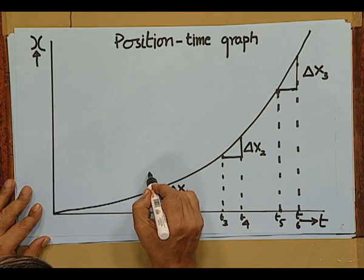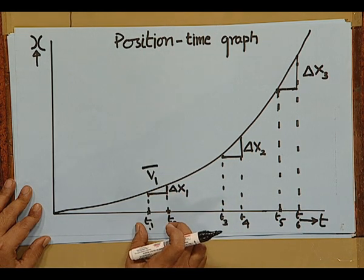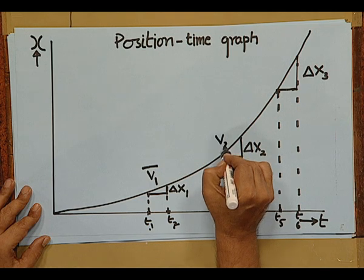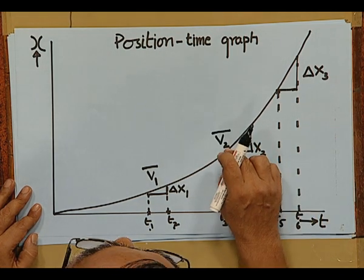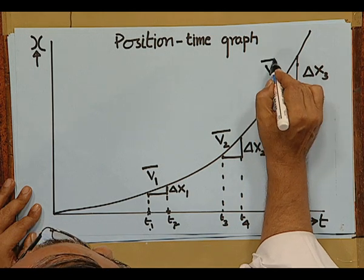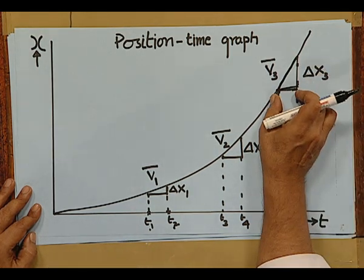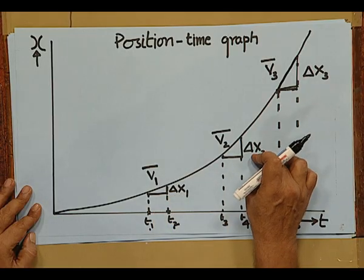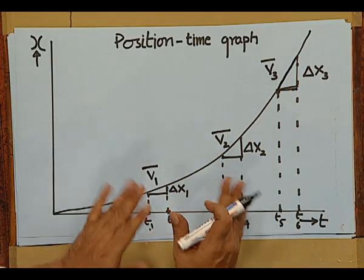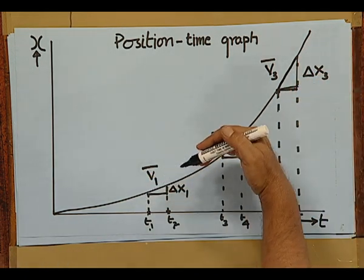The average velocity in the interval T1 to T2 is V1-bar; in the interval T3 to T4 it is V2-bar; and in T5 to T6 it is V3-bar. Each one of them is different because the slopes are different. Taking triangles with the same base but different heights: delta x1, delta x2, delta x3 are increasing for the same interval of time but at different timings. This means the average velocity goes on changing. So, if the position-time graph is a curve, the average velocity goes on changing with time.